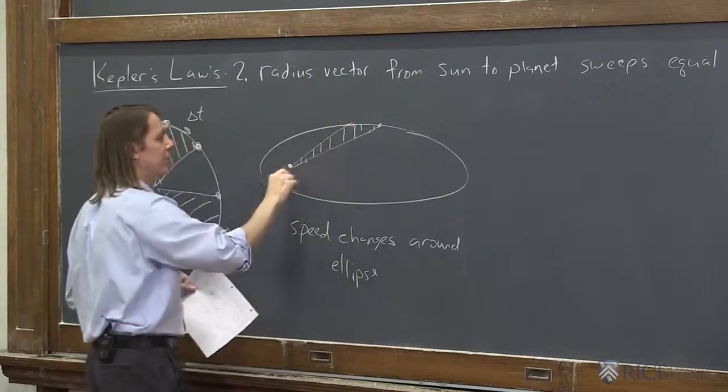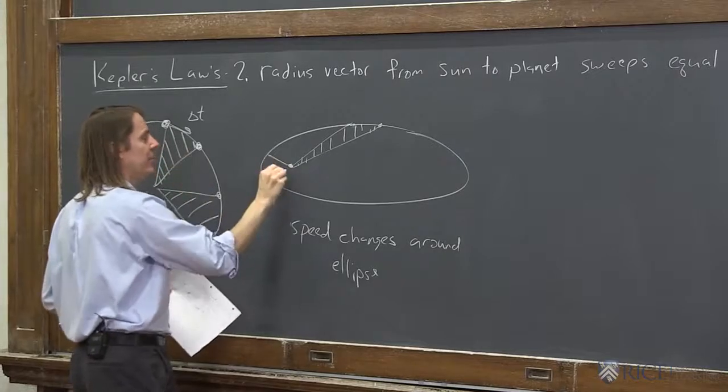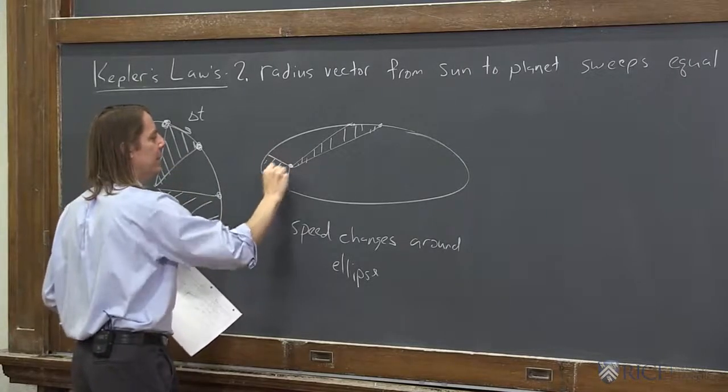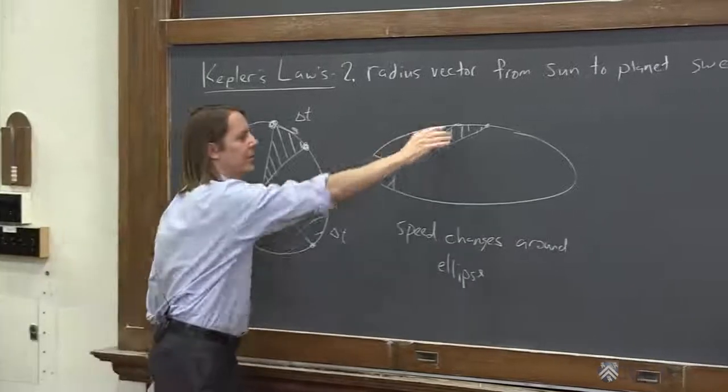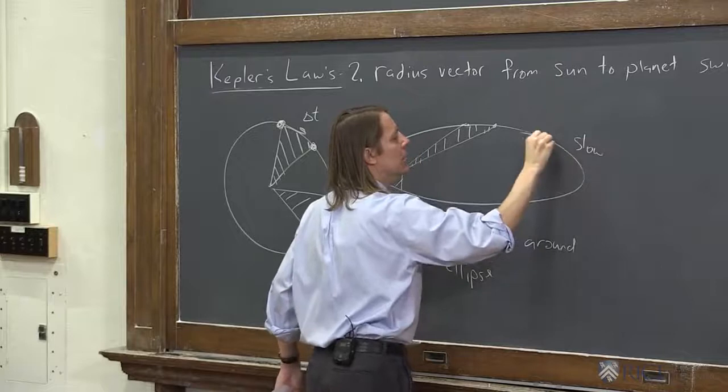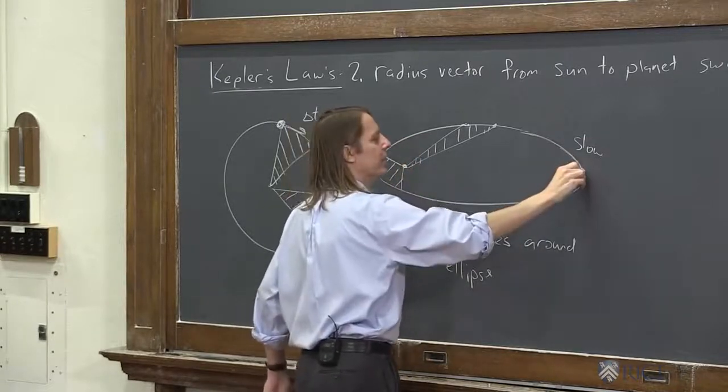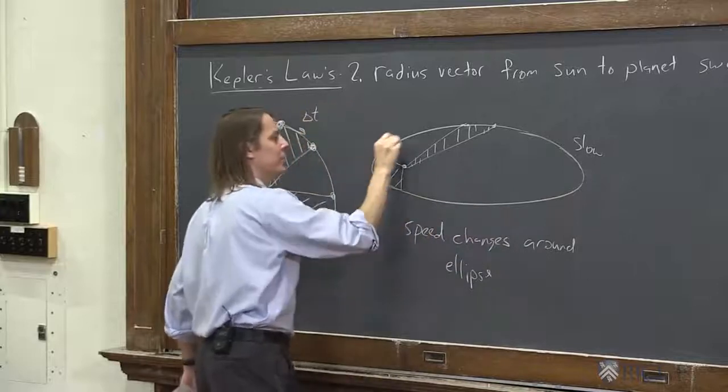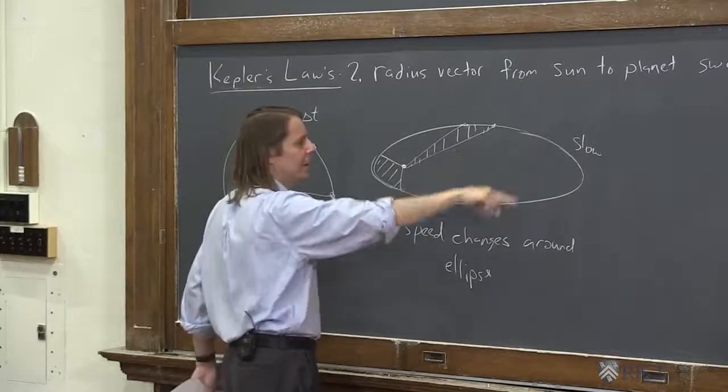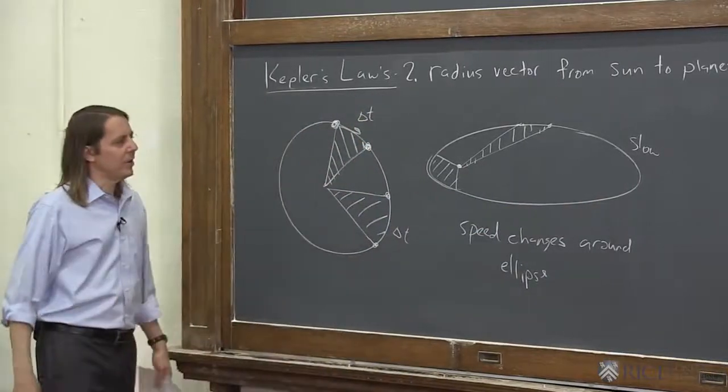So if it's here, an equal area would need to look something like that, because it's so much shorter. This has all this length here and here. That means that it's going slow when it's out here, when there's a very long radius for it to create an area, and it's going very fast when it's around here. And this is what he observed, is that they go slow and they speed up as they go around, in a way that the area stays constant.